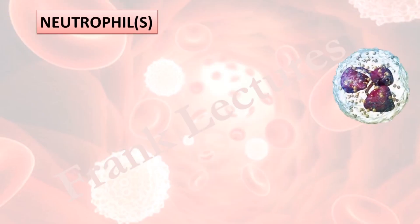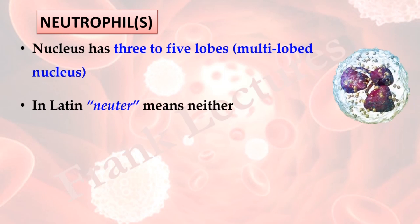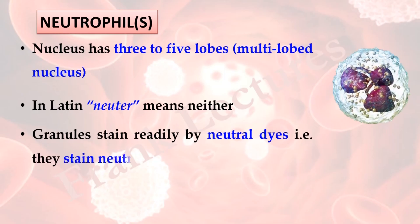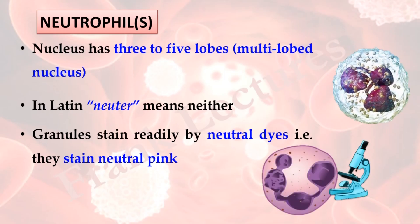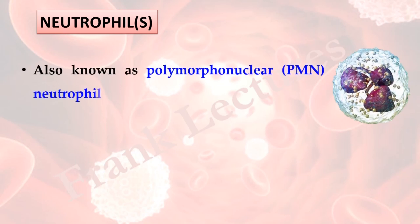Neutrophils: In case of neutrophils, the nucleus has 3 to 5 lobes, so they have a multi-lobed nucleus. In Latin, neuter means neither and philos means to love — so neither loving — meaning the granules of neutrophils are neither acid loving nor base loving. Granules are stained readily by neutral dyes and stain neutral pink. Neutral dyes are actually a compound of acid dye and basic dye. Under light microscope, neutrophils look like this. Neutrophils are also known as polymorphonuclear neutrophils, which refers to their irregularly shaped and multi-lobed nucleus.